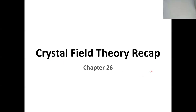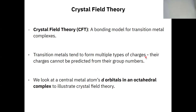When we're talking about crystal field theory, this is just another bonding model. We've talked about a few different bonding models already, a lot more in the earlier portions of the class in chapters 9, 10, and 11. That's when we really started talking about electrons and how electrons interact with each other and how bonds are formed. Crystal field theory is another way that we can look at electron interactions.